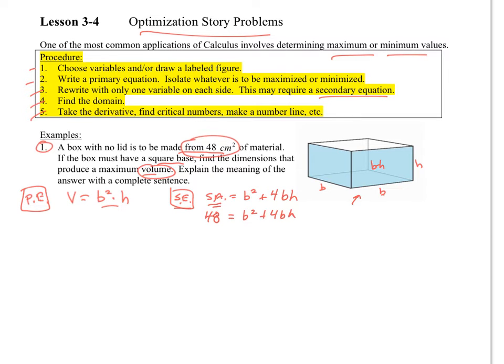Now I can go ahead and solve for my h. So I get 48 - b² = 4bh. I can divide both sides by 4b, and there's my h: h = (48 - b²)/(4b). That is my equation now that I can plug in for h into the volume equation so that I have only volume in terms of one variable. So I substitute out h and put that in, and then I can simplify this a little bit. I can cancel the bs and do some other things.